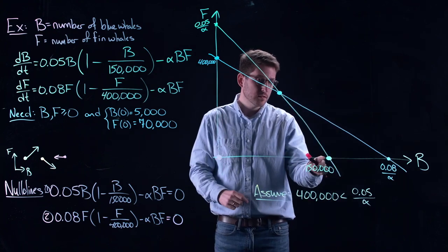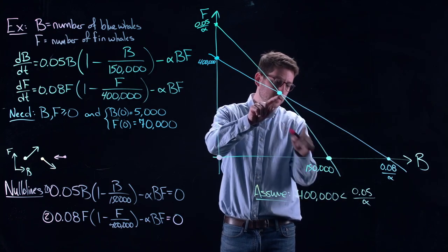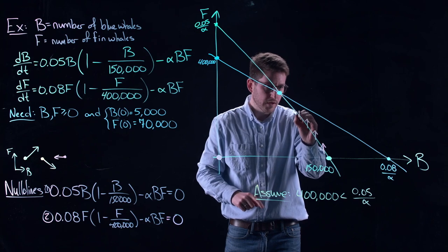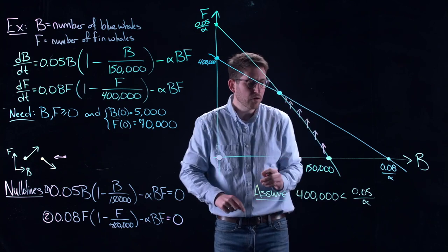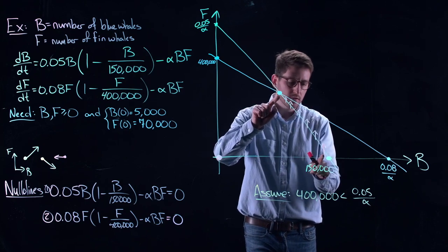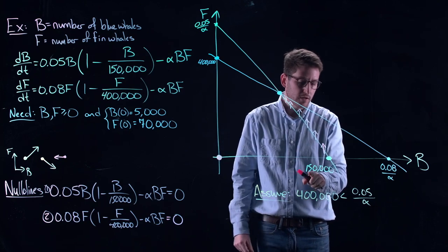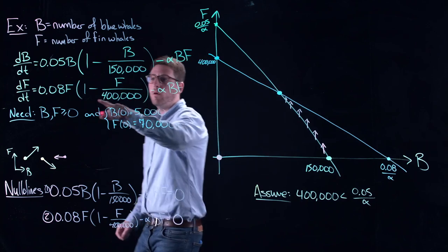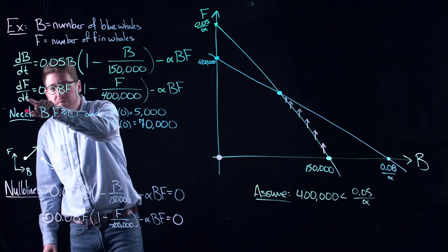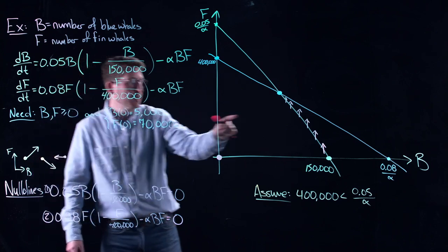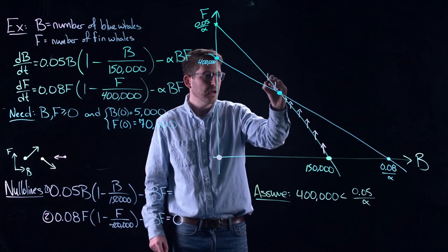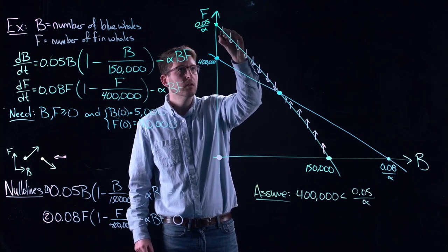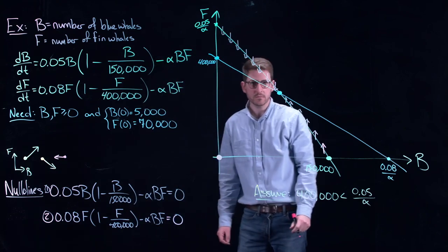So in this case, if I am on this line between here and here, my vectors are positive. They're pointing upwards in F. How do I know that they're pointing upwards in F? Because between these, when B is smaller than 150,000 and between this point, I know that my dF/dt equation is positive. Similarly, as I cross over this thing, my dF/dt equation becomes negative. And therefore, vectors start pointing downwards.